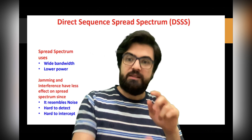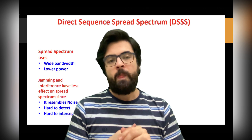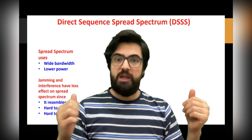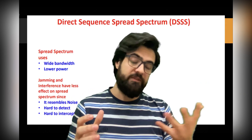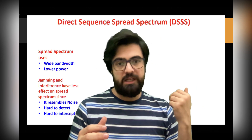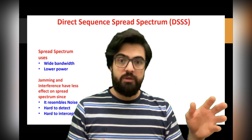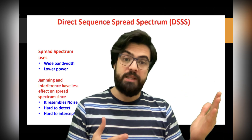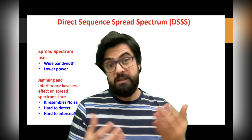The replacement is DSSS — Direct Sequence Spread Spectrum. In this approach, the signal spreads all over the band and looks like noise, making it less likely to be jammed and less likely to be detected. At the same time, it XORs — Exclusive Or — with a PN sequence, a Pseudo Noise Sequence, which effectively encrypts the signal as well.